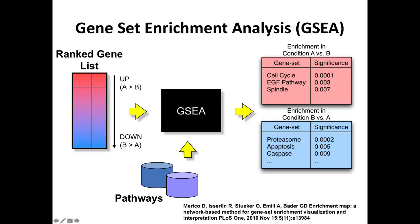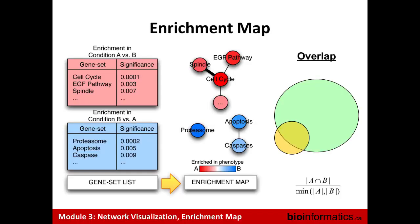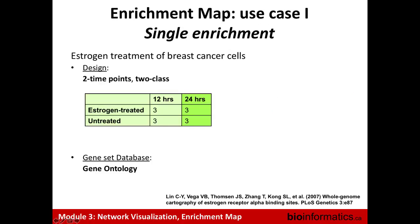We can take GSEA results, which give us pathways enriched in condition A versus B and also condition B versus A — frequently we think of these as upregulated and downregulated. It doesn't mean the pathway is actually activated; it means the pathway is enriched in the upregulated genes, which could be negative regulators of the pathway. For GSEA we can color the nodes two different colors, red and blue for up and down. The overlap between gene sets is computed using a set overlap statistic.